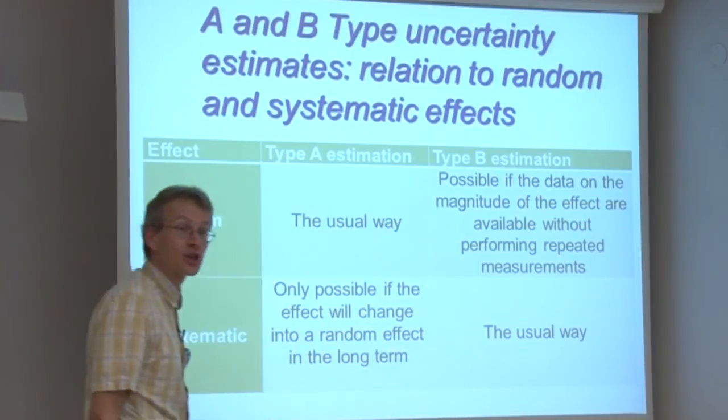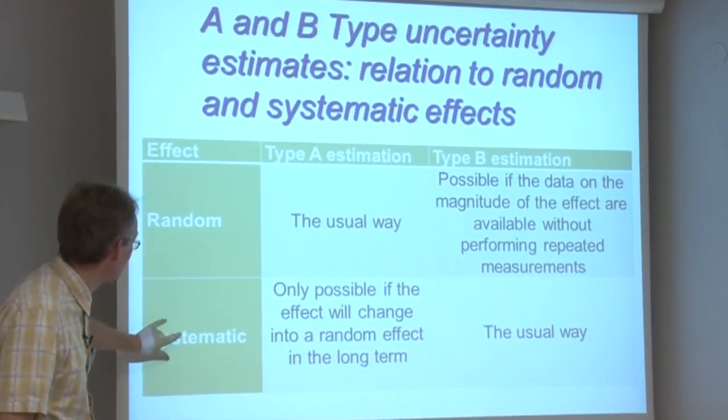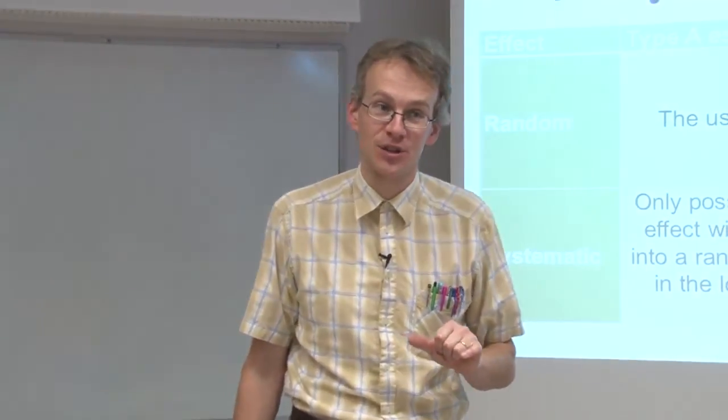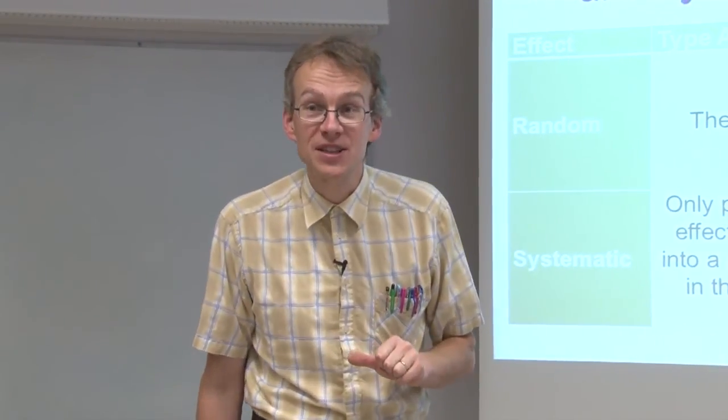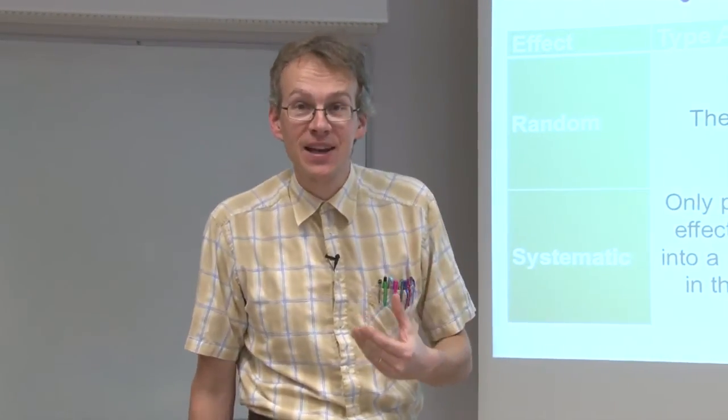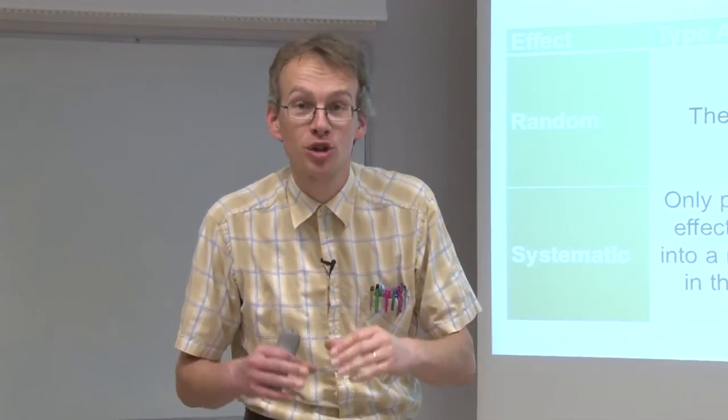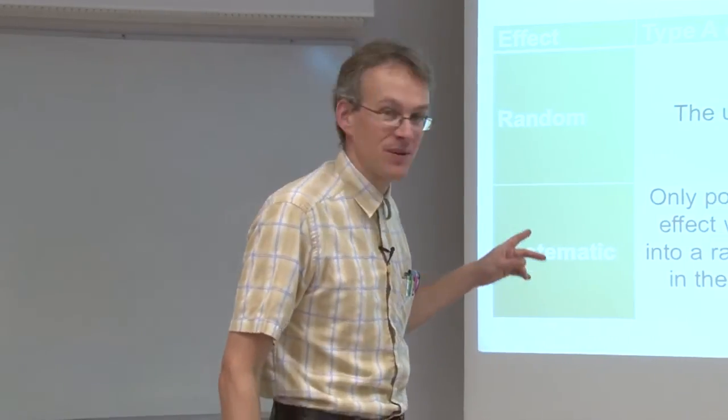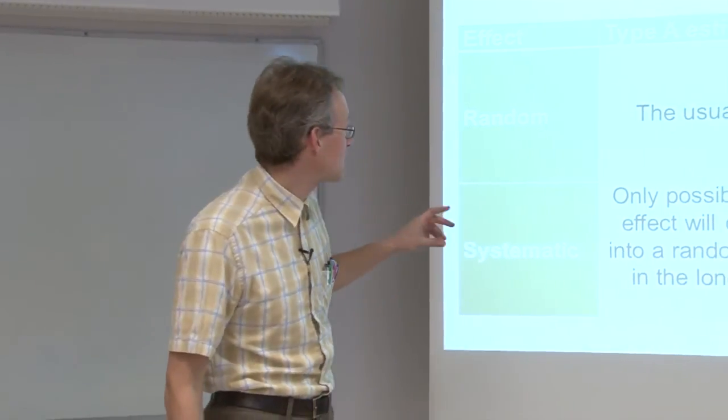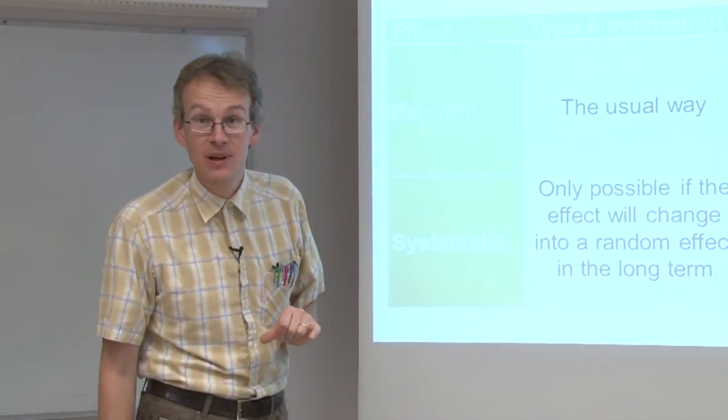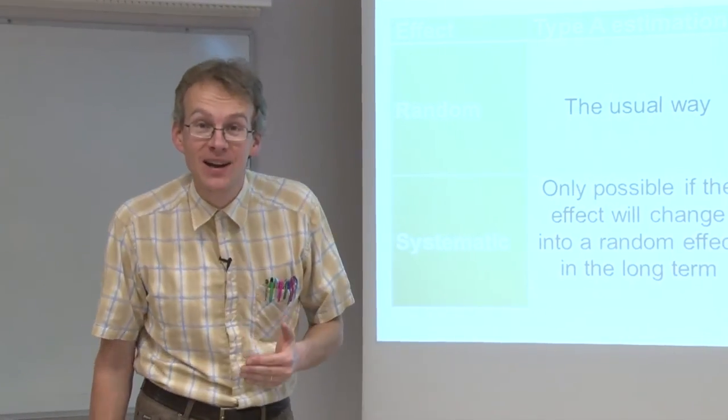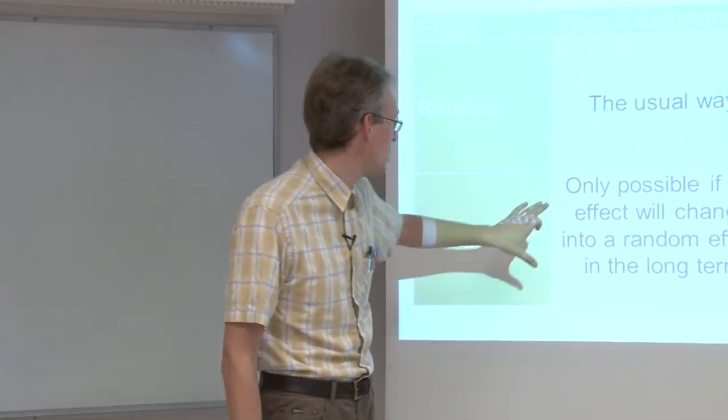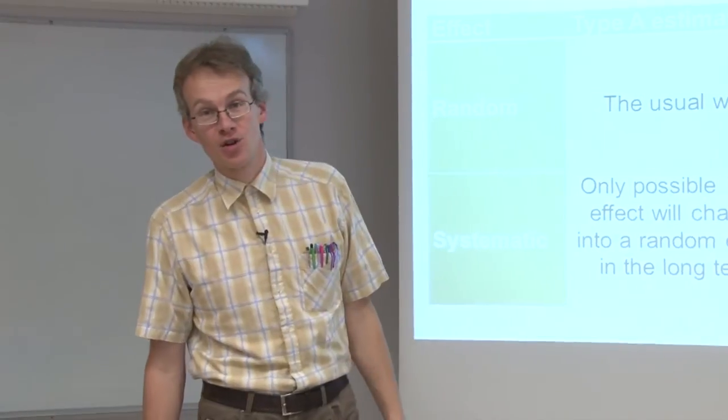However, in certain cases, certain systematic effects can also be evaluated by type A uncertainty evaluation. And these are all those cases where the effect is a systematic effect in the short term but in the long term can become a random effect. In such a case, type A evaluation is possible, and this is what is typically done in within-lab long-term reproducibility calculation, which we see later on in this course.